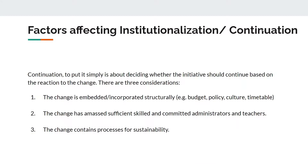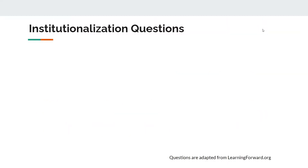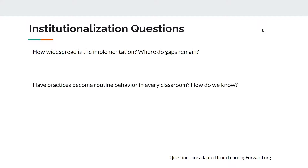When planning for the institutionalization of a change initiative, there are two steps. First, you must determine whether the change is worthwhile enough to continue after implementation has run its course. Assuming it is, organizational changes are implemented to promote sustainability of the initiative. Some questions to consider in the institutionalization phase: How widespread is the implementation? Where do gaps remain? Have practices become routine behavior in nearly every classroom? How do we know? How will we be able to sustain the change over time?